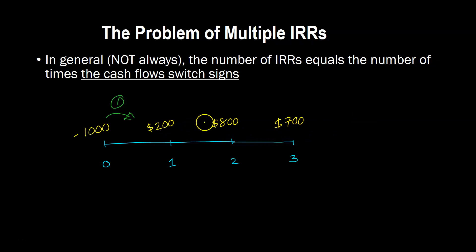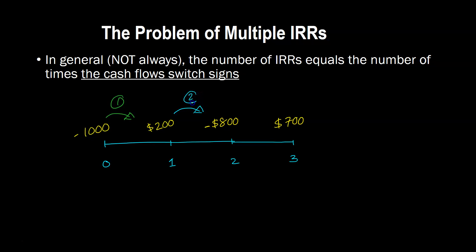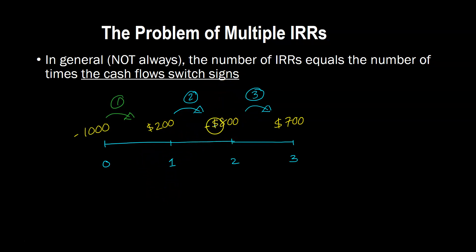If we change things a little bit and make that $800 negative — in other words, there's an outflow at time period two — that changes things. Now the cash flows are switching signs three times: negative to positive (one), positive to negative (two), and negative to positive again (three). In general, though not always, the number of IRRs equals the number of times cash flows are switching signs. You can resolve this by calculating the modified internal rate of return.